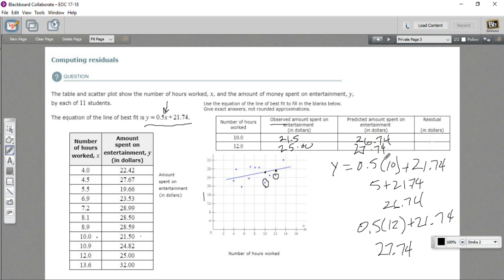Okay, now we can just calculate the residual by subtracting. So I'm going to just take 21.5. I'm going to grab my calculator for this and subtract 26.74. And I get a negative 5.24. And for the second one, I take 25, and I subtract 27.74. And I get a negative 2.74. So that is how to calculate residuals from a scatter plot.